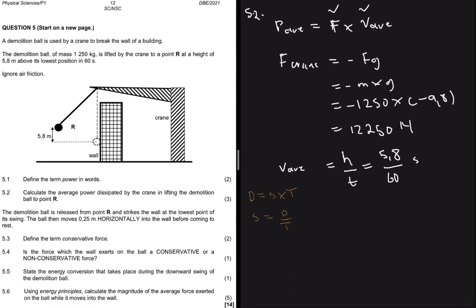If we put that back into our equation we'll get power average equals to 12,250 multiplied by 5.8 and divided by 60. If I put that in the calculator I get 12,250 multiplied by 5.8 meters divided by 60 seconds. That gives me 1184.16 recurring joules per second or watts.